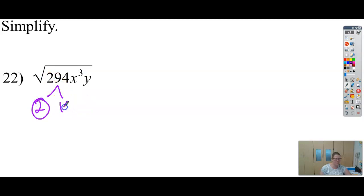So 294 is 2 times, let's see, it would be 147. And then let's go put 3 into 147. And that would go in 49 times. And then 49 is 7 times 7.